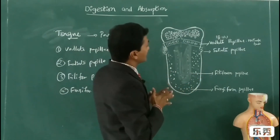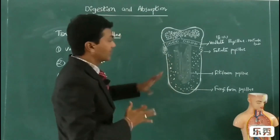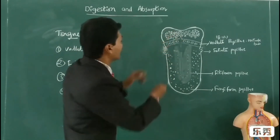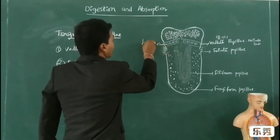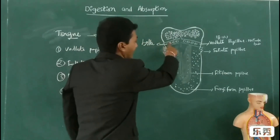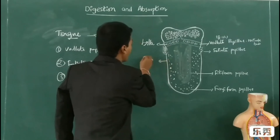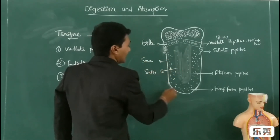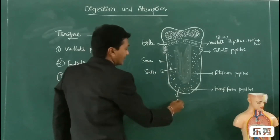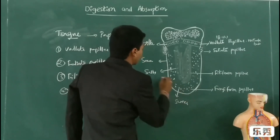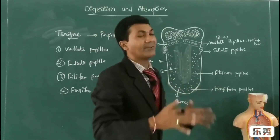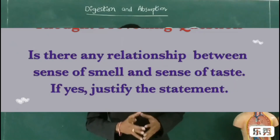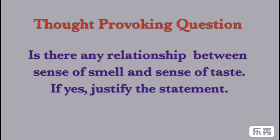So, looking at the different regions of the tongue, the detection of taste is different. The back region detects bitter taste — bitter taste can be identified here. The sides detect sour taste, and the middle part detects salty taste. And the tip detects sweet taste. So there are different regions by which the tongue can detect different tastes.